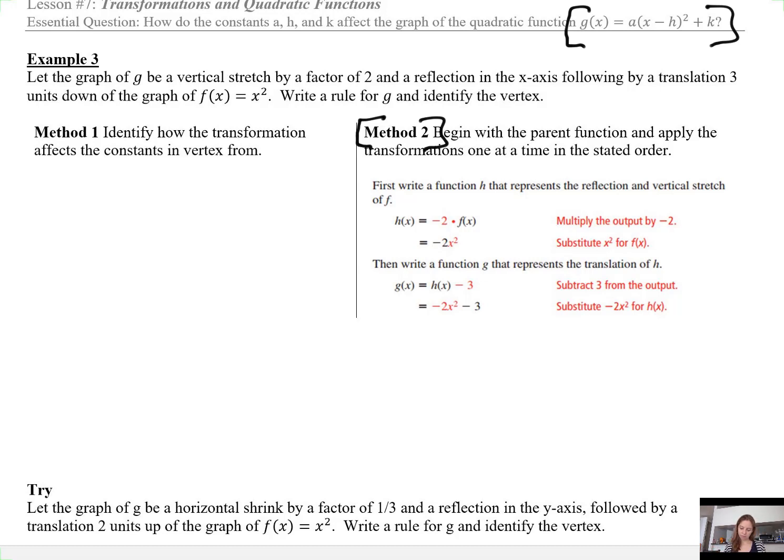So we have a vertical stretch by a factor of 2, means an a value of 2. A reflection in the x-axis means an a value that is negative, so a is negative. Followed by a translation 3 units down means the k value is negative 3. So to recap, I have an a value of negative 2, a k value of negative 3, and no h value.